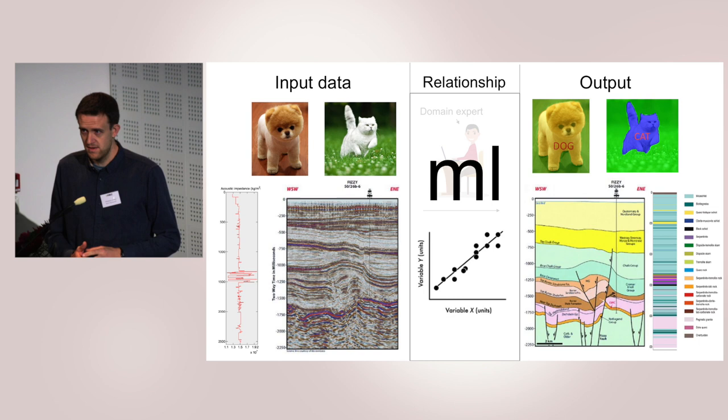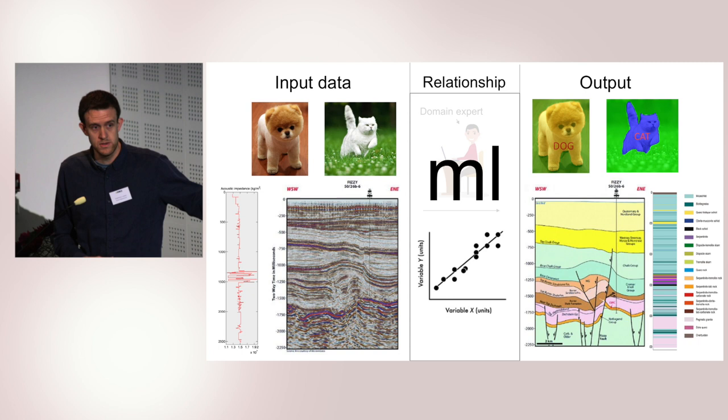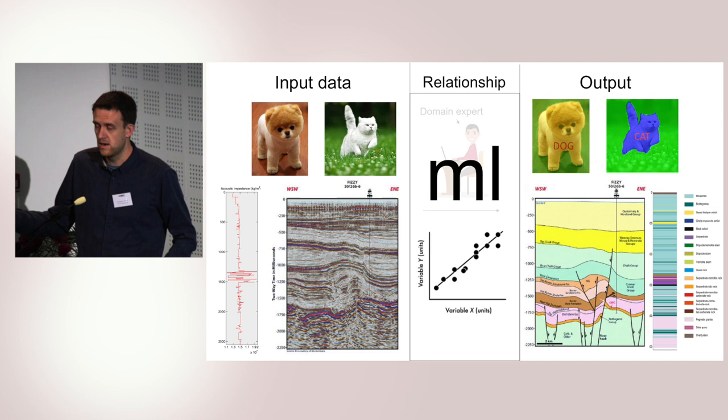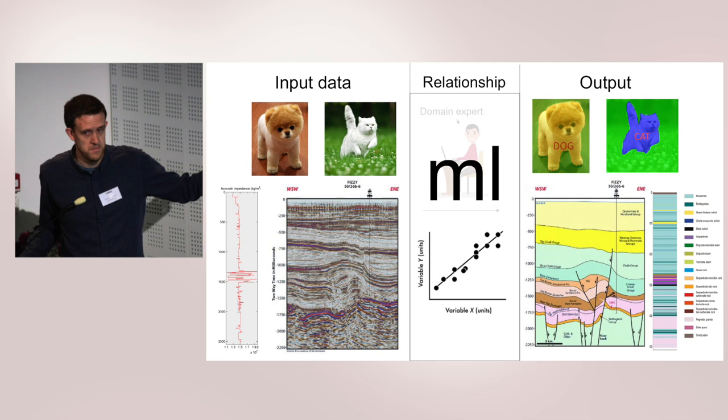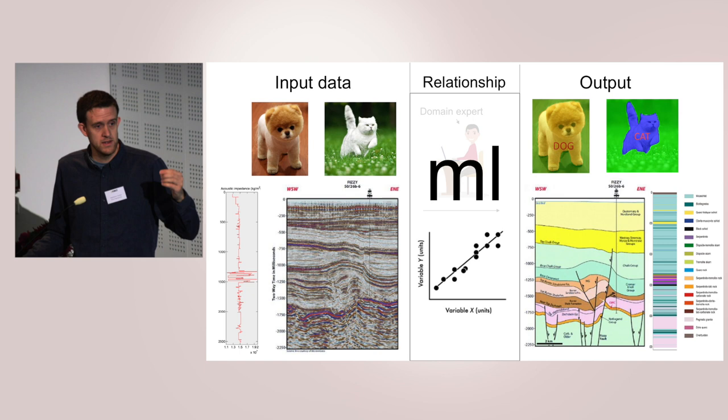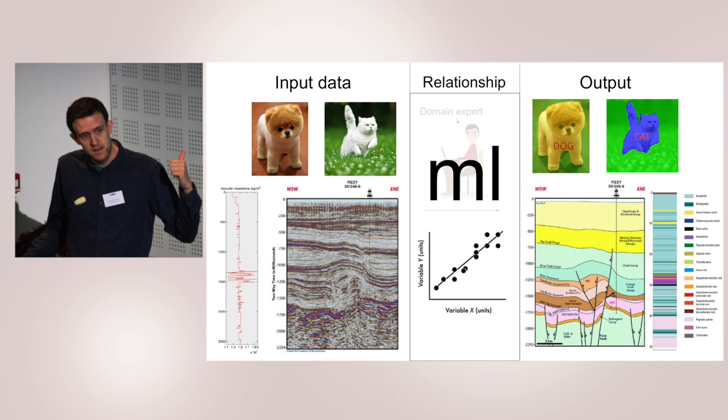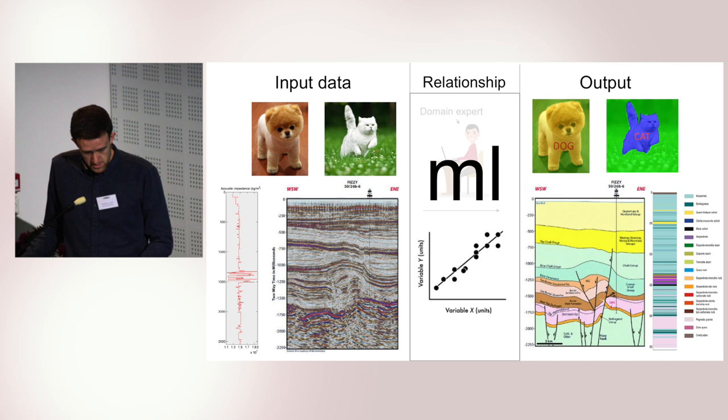In machine learning, we typically have some input data and some output data that we want. We want an algorithm that can take us from input data and give us output that has more value. For example, this might be a well log where, instead of looking at core samples, we try to make an algorithm that goes directly from the well log to the lithology.